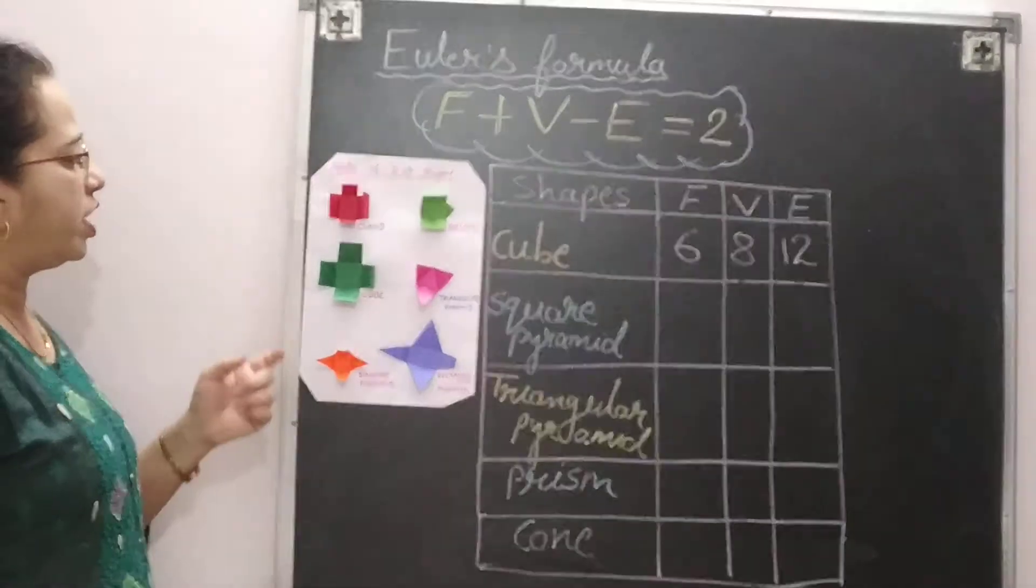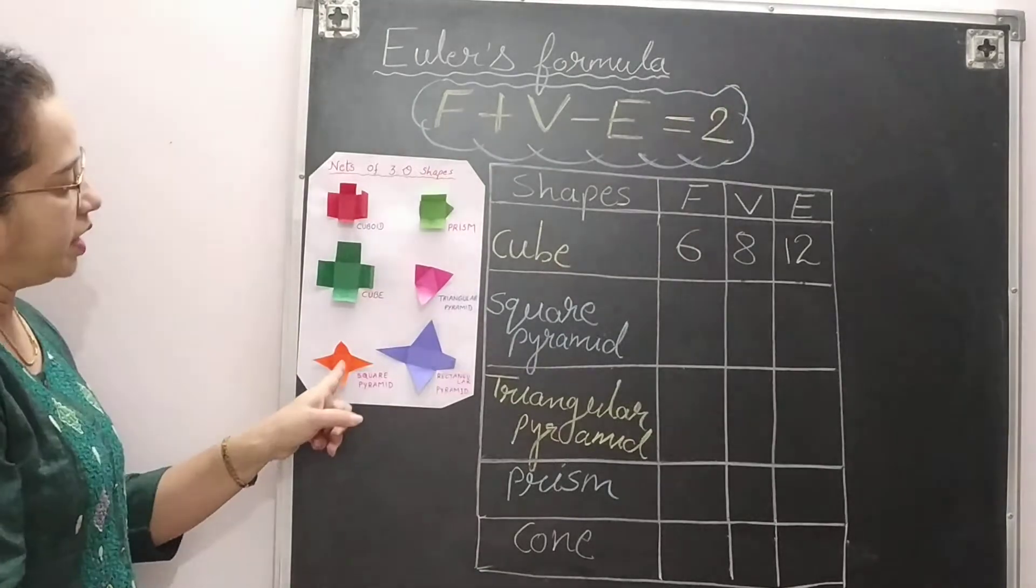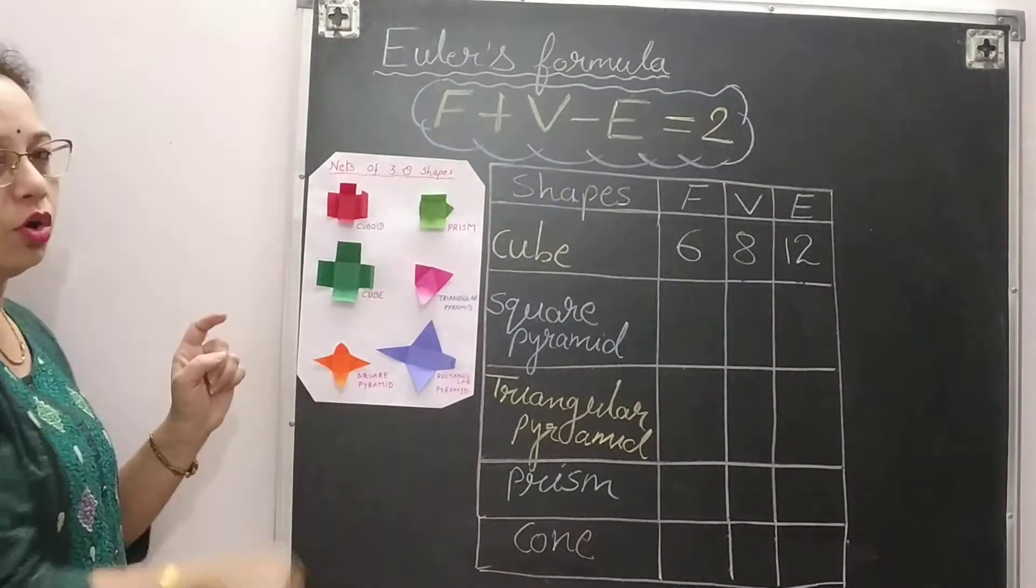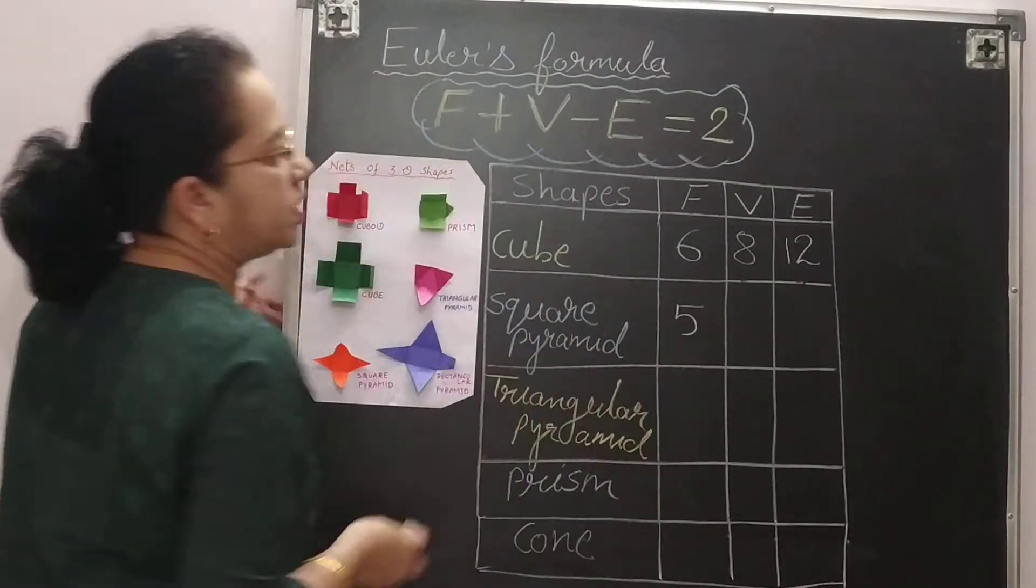Now come for the square pyramid. This is your square pyramid. So how many faces it has? The base one is square and this 1, 2, 3, 4. So 4 plus 1, 5 faces. So we have here 5 faces.